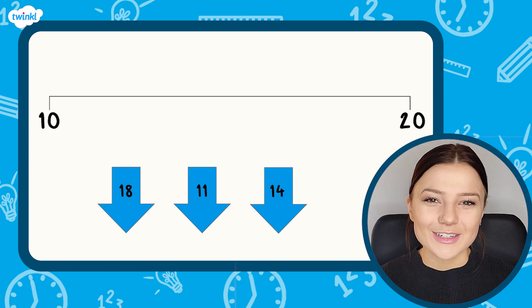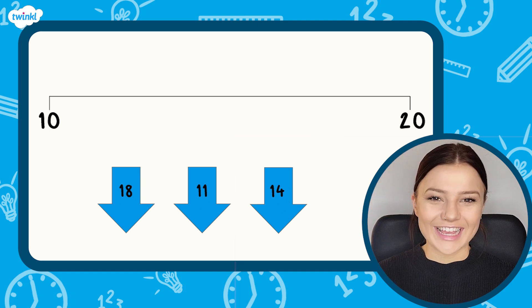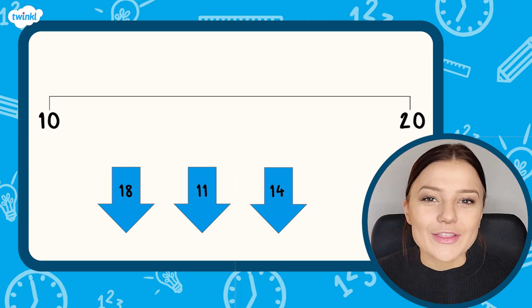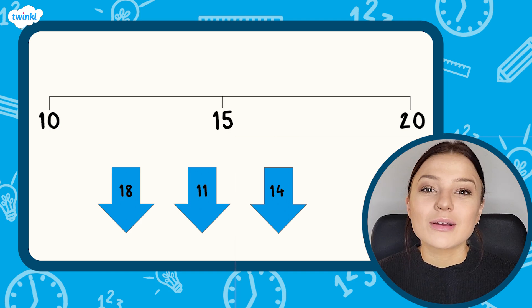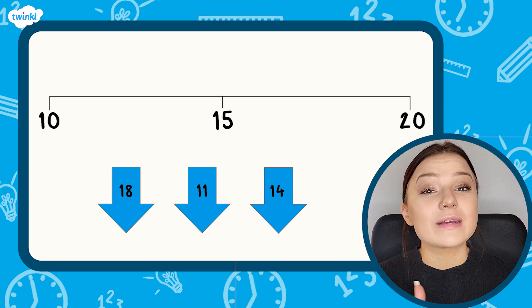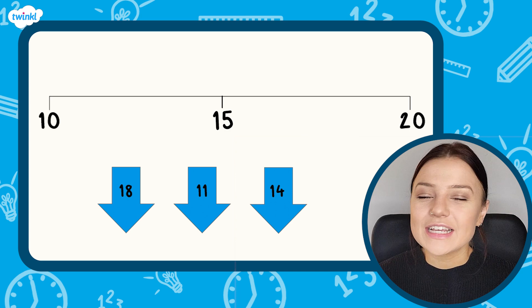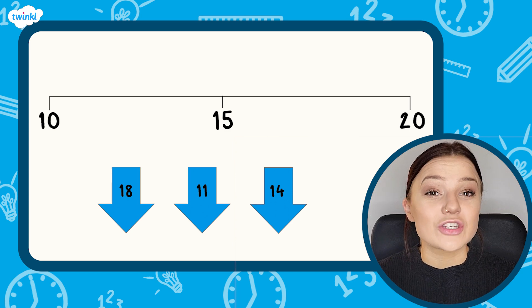Welcome back. How did you get on? Brilliant. Well we already know that halfway between 10 and 20 is 15 which is approximately here. Once you know which number is halfway it is easier to estimate where the other numbers should go.